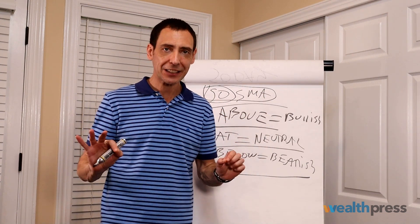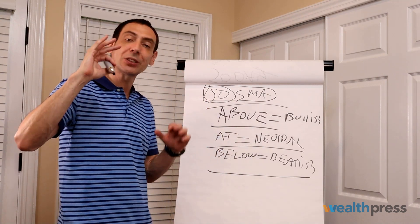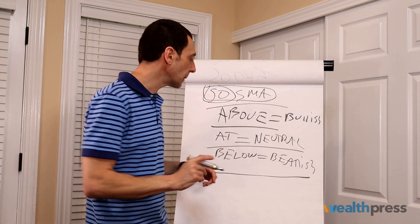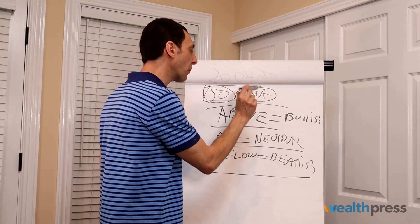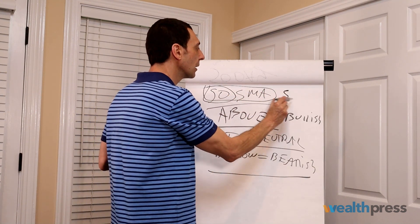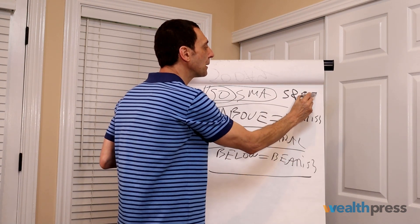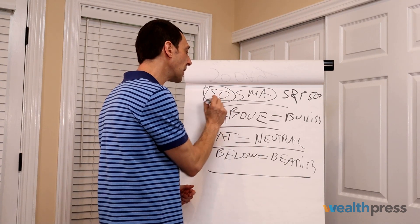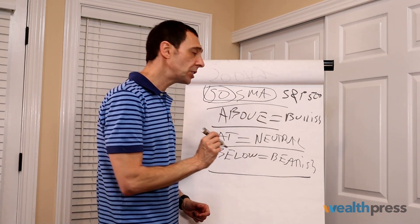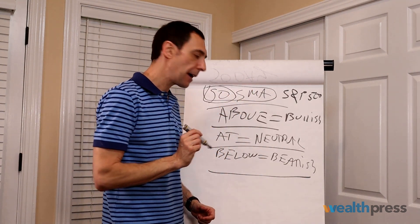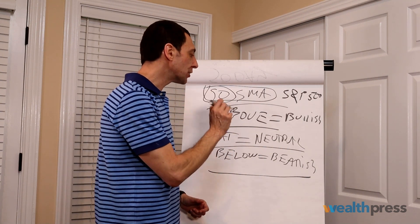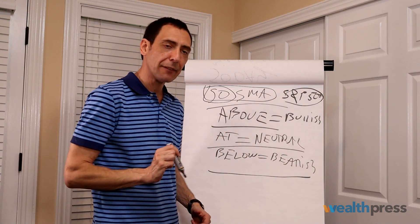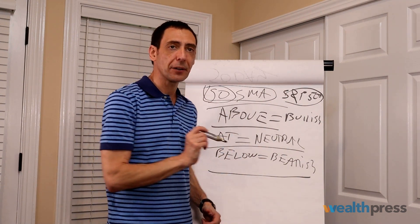Simple moving average — not exponential, not highs and lows, nothing like that. Just a simple moving average. Why? Because funds use it. We trade the S&P 500 as the index. If the index is trading above the 50-day moving average, markets are bullish. If it's trading at the 50-day moving average, markets are neutral. And if price of the S&P 500 is below the 50-day moving average, markets are bearish.